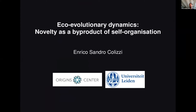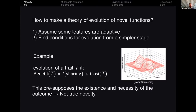What I'm going to propose is that having these kinds of multi-scale models, like the ones that Silvia Demonte proposed and that Renske also showed, is the ideal setup for modeling evolutionary innovation. And so I can basically skip my introduction.